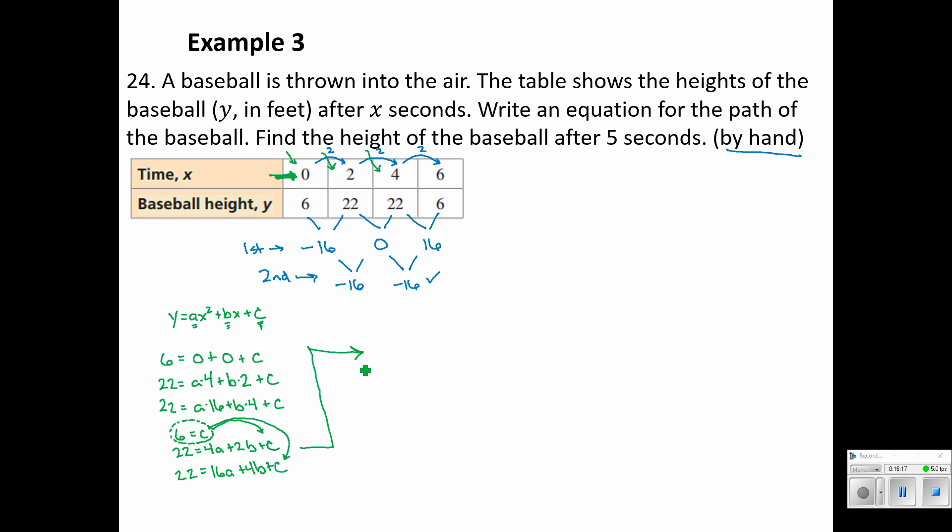So 22 equals 4a plus 2b plus 6. Well, if I subtract 6 from both sides, that tells me that 16 equals 4a plus 2b. And then my final equation, when I substitute 6 into that one, 22 equals 16a plus 4b plus 6. Now again, just by subtracting 6 from both sides. And let's change colors one last time here for our final step.